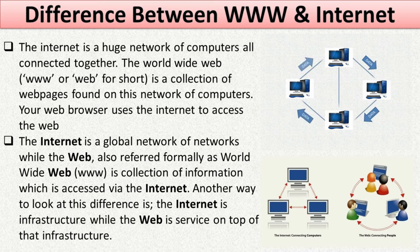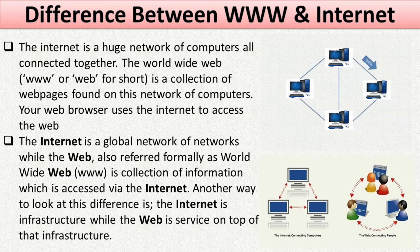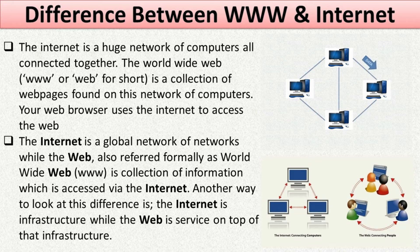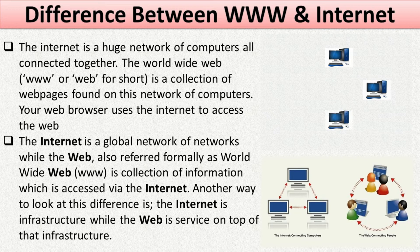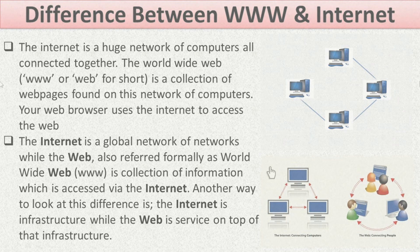Another way to look at this difference: the internet is the infrastructure while the web is a service on top of that infrastructure. The internet is a network of networks in which all networks of the world are interconnected. The World Wide Web is a collection of information in the form of web pages accessed with the help of the internet. We can say that the internet is a container and the World Wide Web is an item in that container.